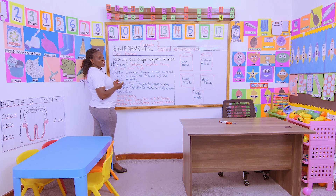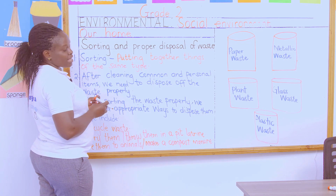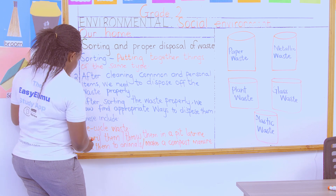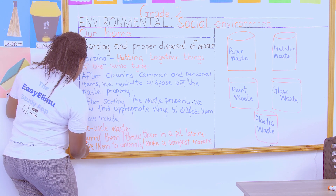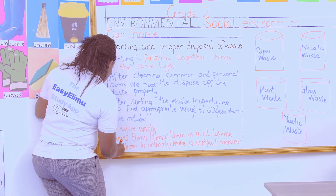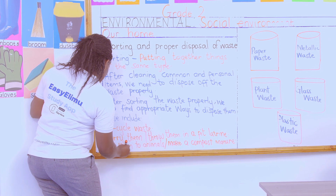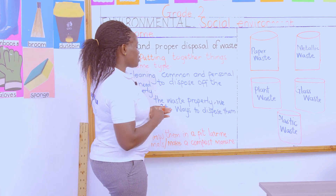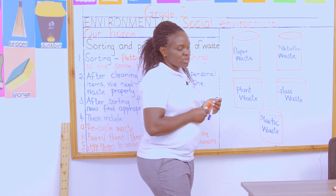Regarding plastic waste — plastic waste can be recycled. It can be taken back to the factory and recycled, or it can be burnt. If not burning, you take it to the factory to be recycled, or it can also be used for other purposes.